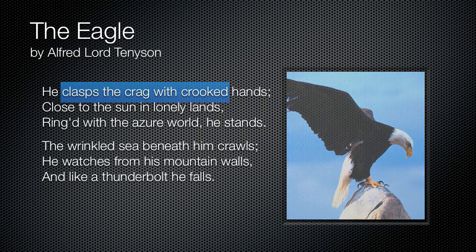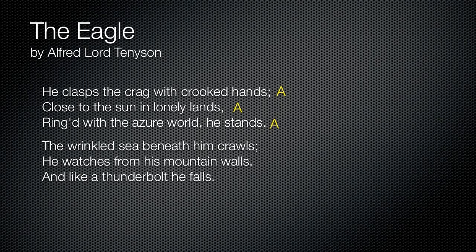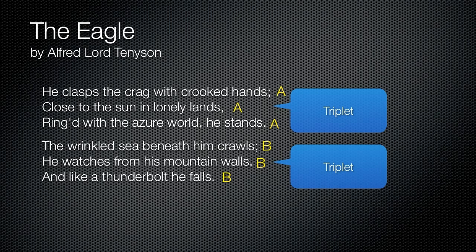Next we're going to look at the rhyming scheme. The first three lines rhyme and then the next three lines rhyme, creating two triplets. The rhyming scheme also ties things together: hands, lands, stands, then crawls, walls, falls — these are sort of like two different scenes.